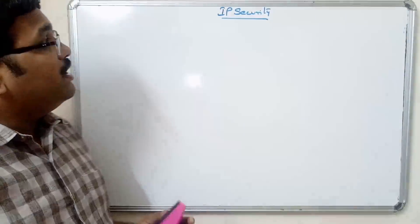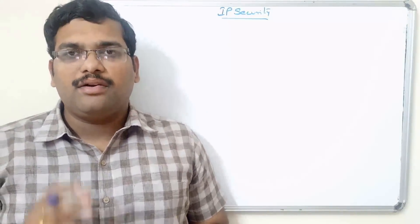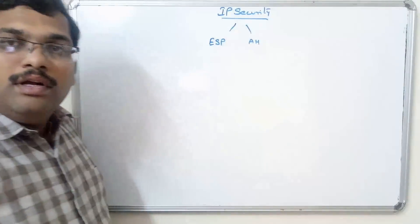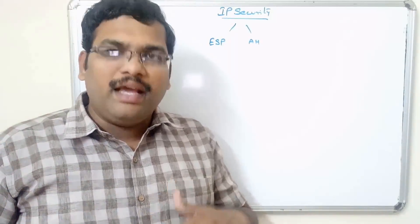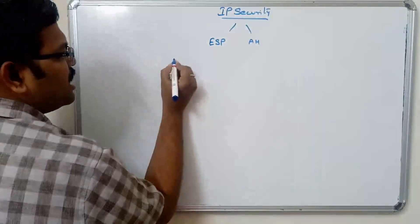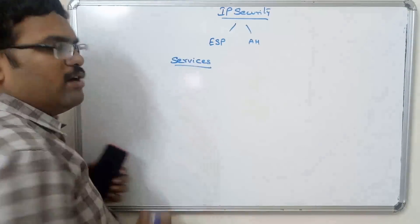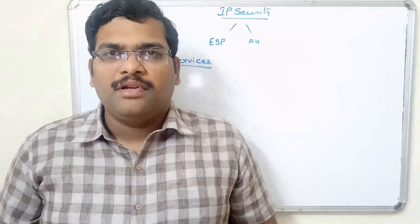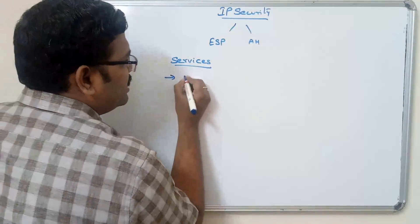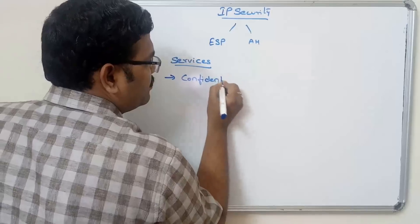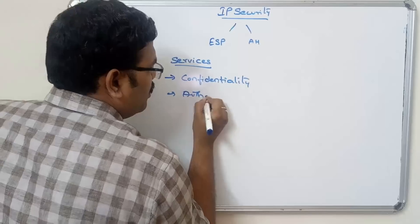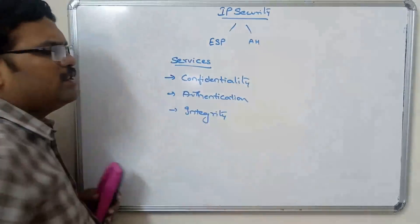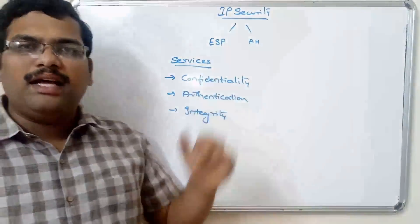This is internet protocol security. In order to implement IP security, we have to implement two protocols: ESP protocol and AH protocol. First, let us look at the services of IP security. As discussed in previous sessions, the security services are confidentiality, authentication, integrity, and signature. Similarly, IP security also provides these services: confidentiality, authentication, and integrity.